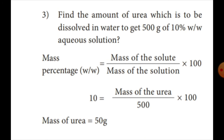Mass percentage of solvent = 100 − 13.79 = 86.21%. Problem 3: Find the amount of urea to be dissolved in water to get 500 grams of a 10% (w/w) aqueous solution. Mass percentage = mass of solute / mass of solution × 100. So 10 = mass of urea / 500 × 100, giving mass of urea = 50 grams.